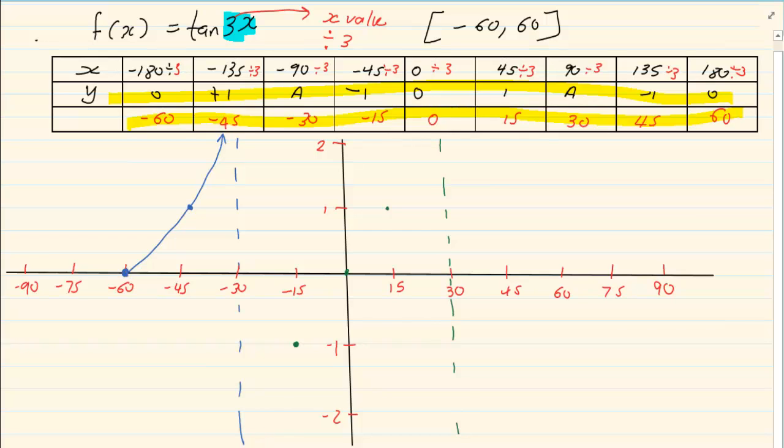So our graph is going in that direction. Then it continues. Then we have 45 and minus 1 and then we have 60 and 0. So if we had continued we have 90. Then you can see the pattern going like that and you can see the pattern going like that.